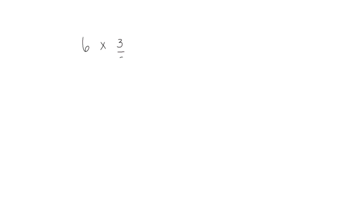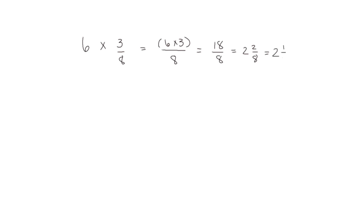Let's look at another problem. Let's take 6 times 3/8, which we know is 6 times 3 divided by 8. When we multiply 6 times 3, we get 18/8. 8/8 is 1, another 8/8 is 2, so if I've made 2 wholes, I've used 16 of the 18 eighths, leaving me with 2/8, and I could simplify that to 2 and 1/4.